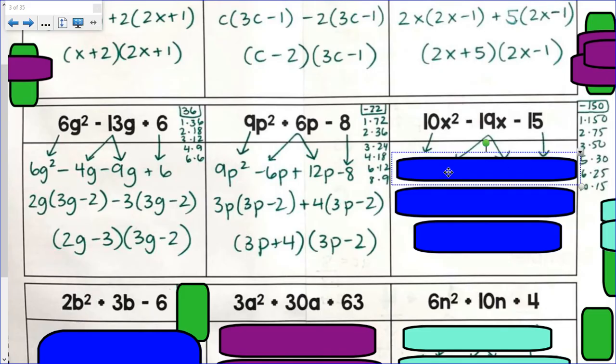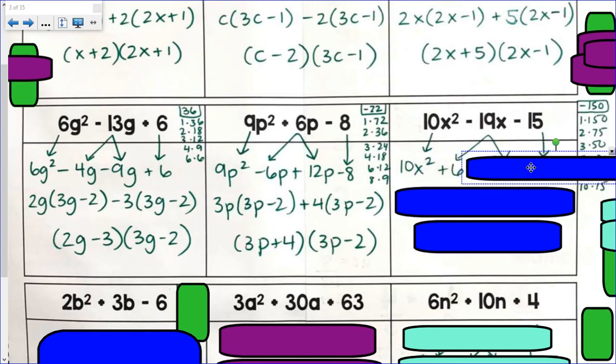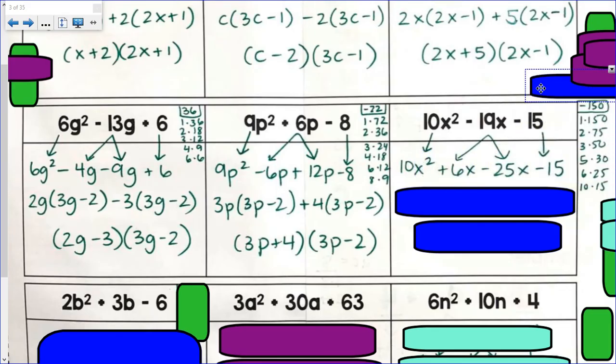So, 10x² plus 6x minus 25x minus 15. Again, these two numbers will add up to get negative 19. They will multiply to get that negative 150.